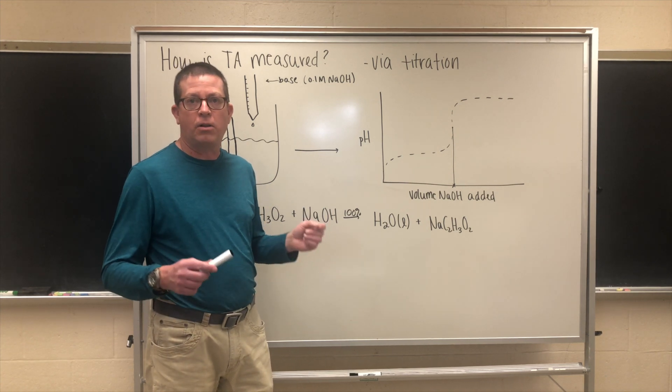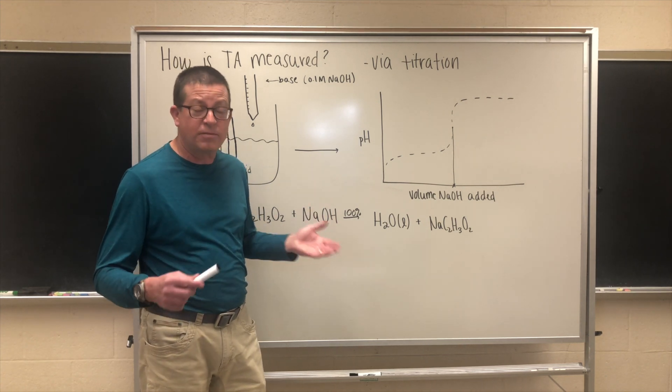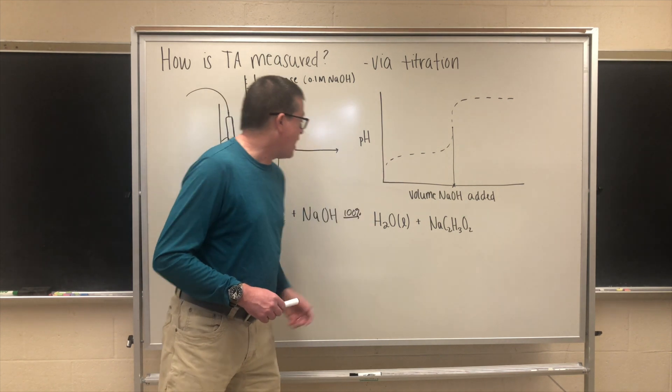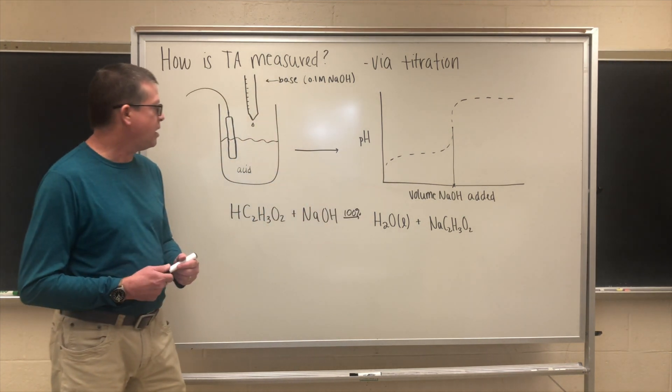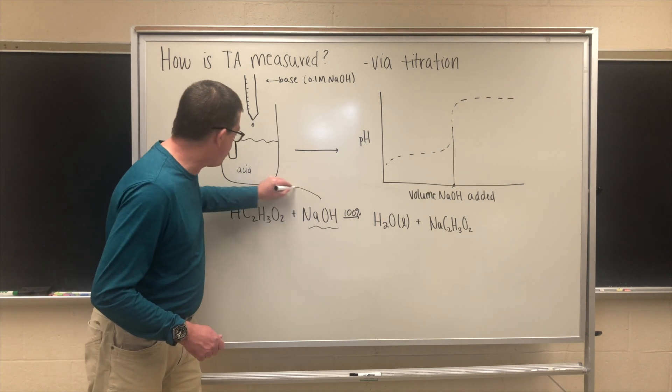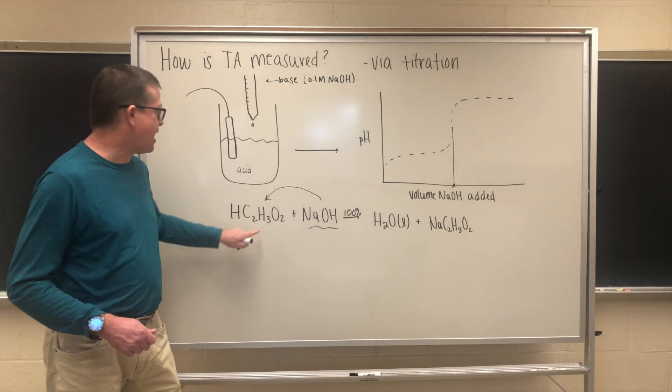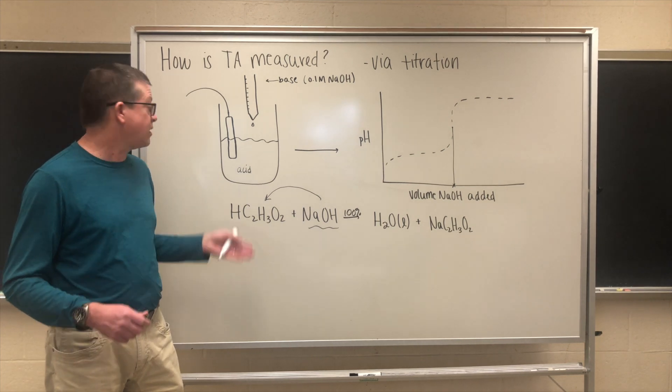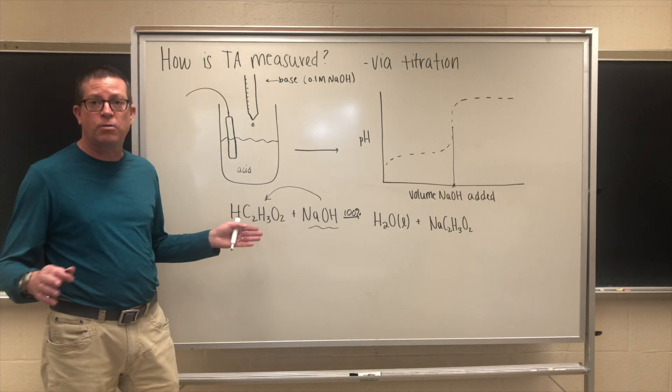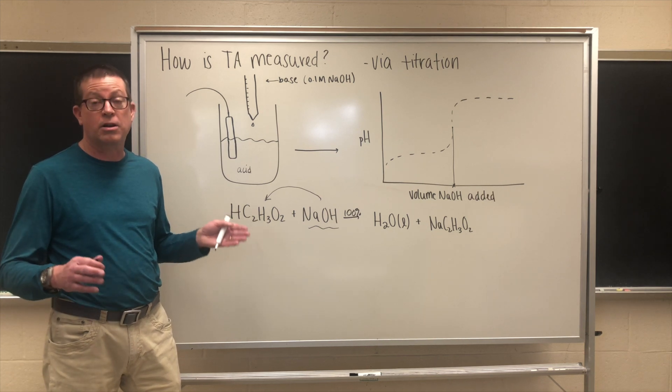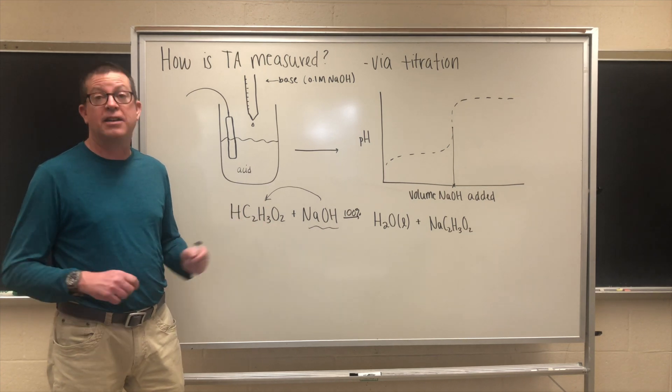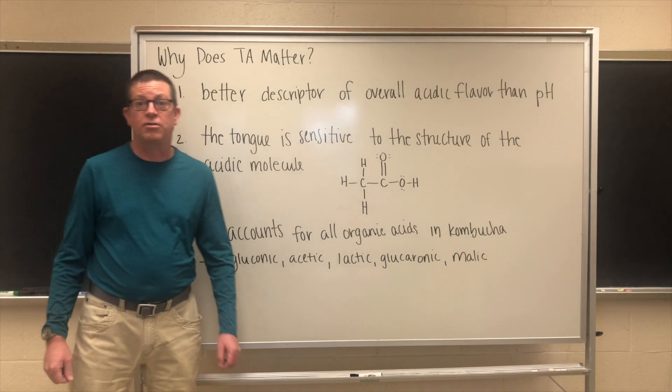When I say all of the acid in solution, I mean hydrogen ion bound and unbound. I can go back to a balanced chemical reaction equation. If I know the volume and the concentration of the sodium hydroxide, I can relate that back to the amount of the acid that I originally had in my kombucha solution and convert that back to a concentration. This gives us the concentration of all the different organic acids in our kombucha sample, with the hydrogen ion both bound up as part of the organic acid and unbound as hydrogen ion.